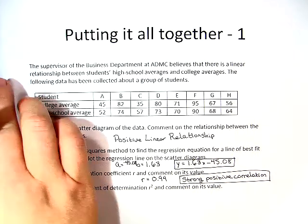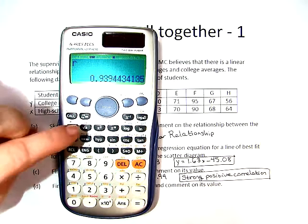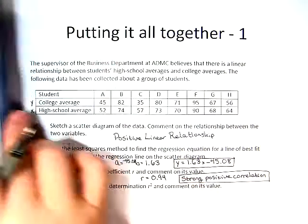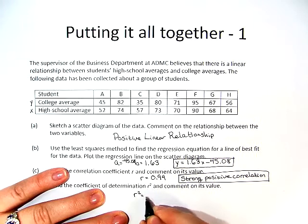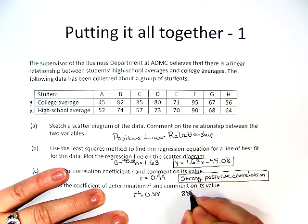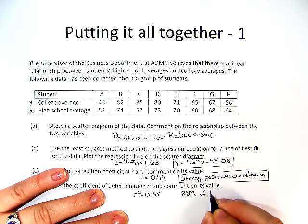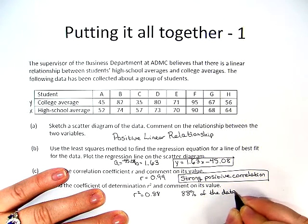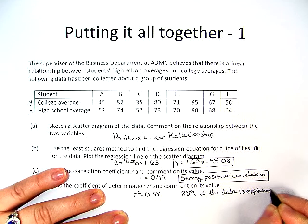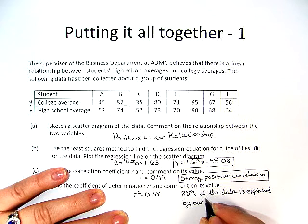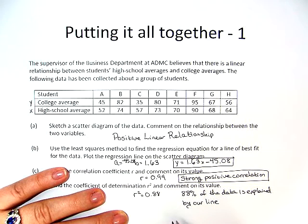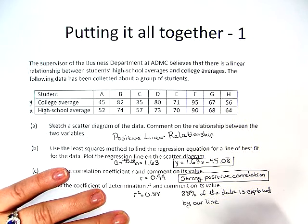And now it says find r squared. Well, we left r in the calculator, so all we have to do is hit the squared button and we get 0.88. So r squared equals 0.88. In other words, we can say 88% of the data is explained by our line. Now if 88% of the data is explained by our line, then that means 12% of the data is not.